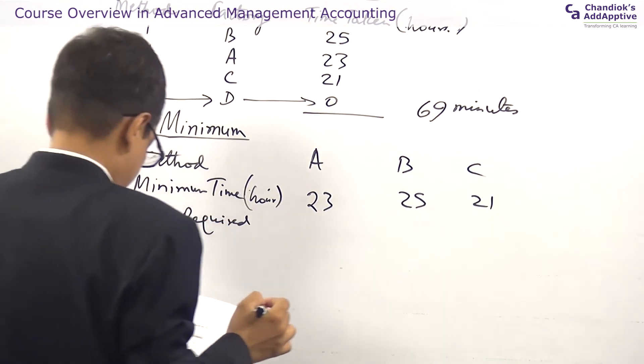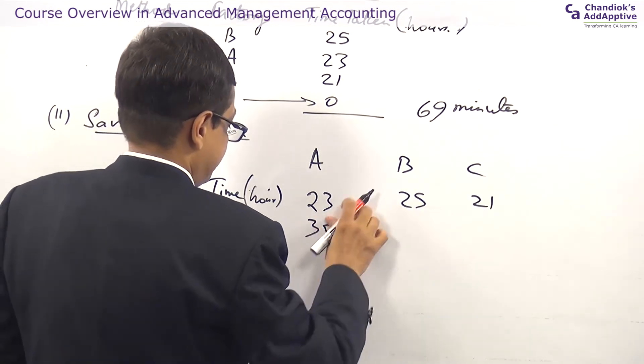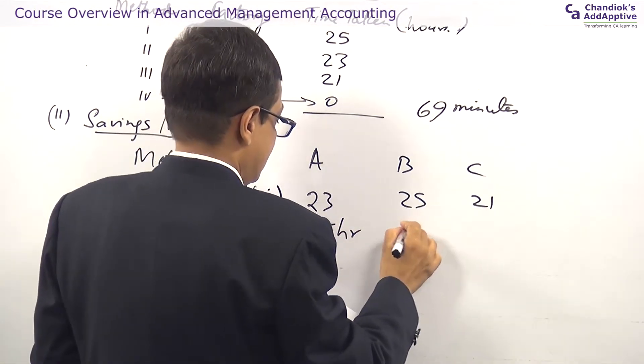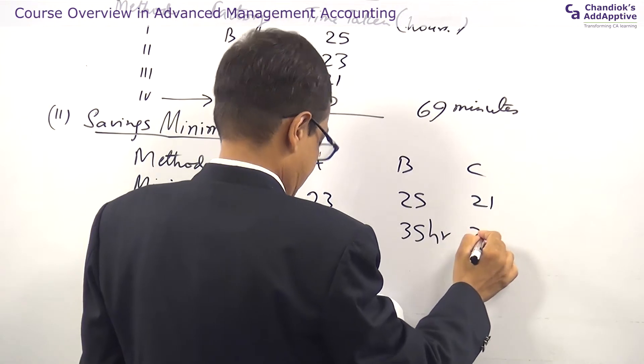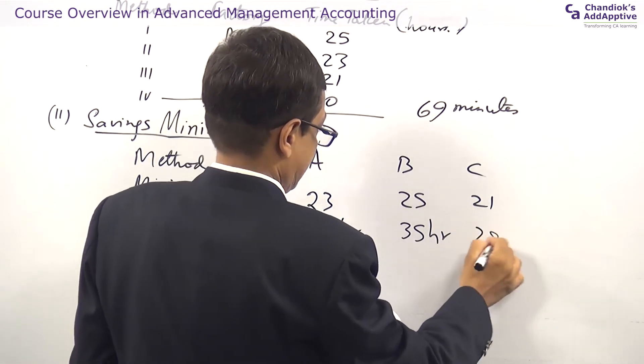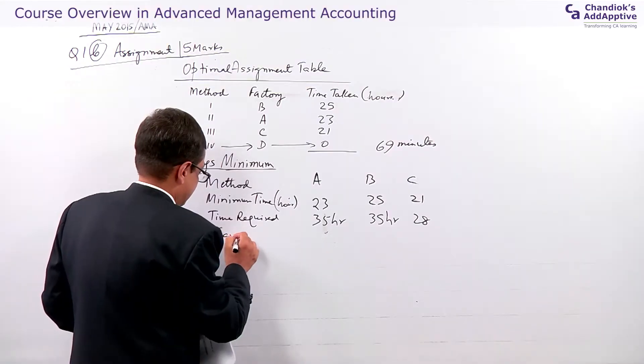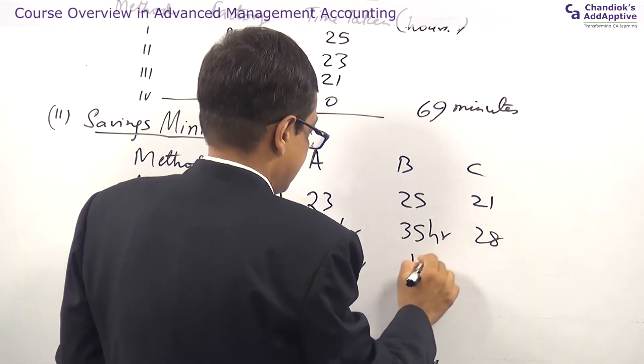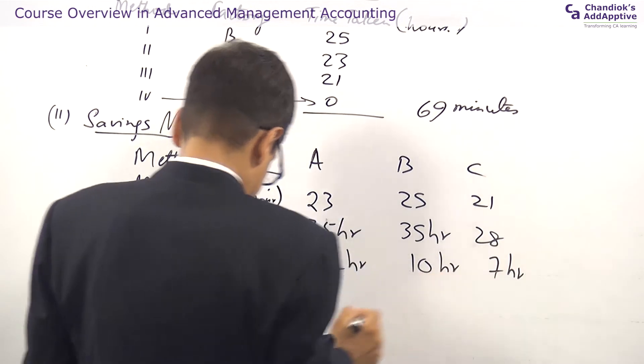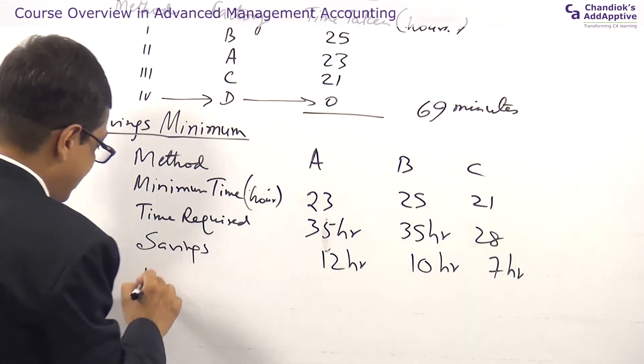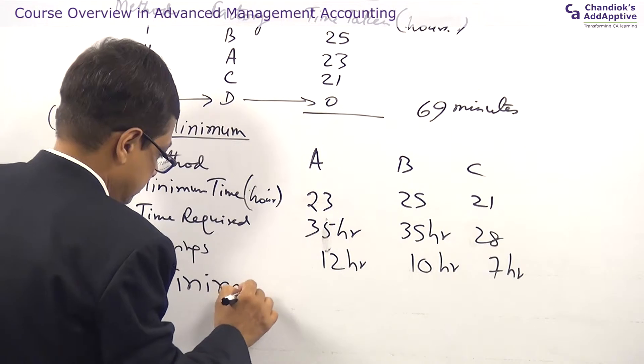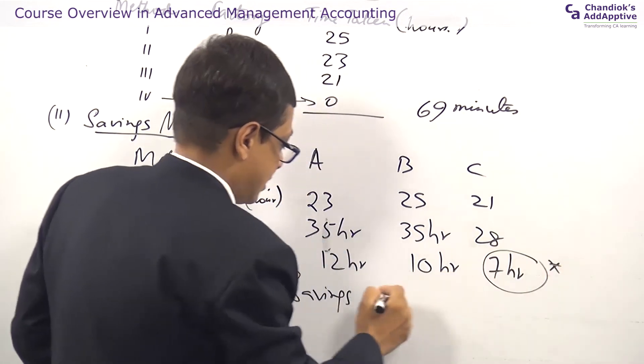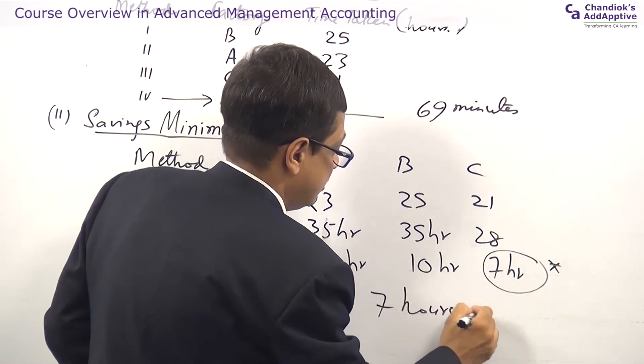The time required is 35 hour. From where I have taken this? I have taken it from the original discussion. 35 hours, this is 28 hours. What is the saving? The savings here is 12 hours, here it is 10 hours, here it is 7 hours. What is the minimum saving? The minimum saving you notice is 7 hours in C.